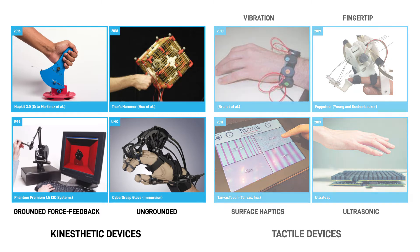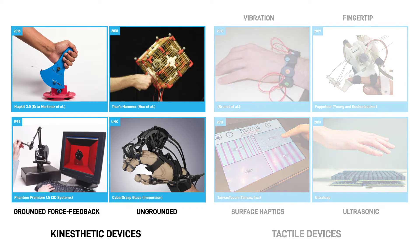Kinesthetic devices include grounded force feedback devices that are stationary robots controlled by a human, and ungrounded devices in the forms of exoskeletons, force gloves, or handheld devices that are mounted on the user's body. These devices still provide kinesthetic force to our muscles, but they are not grounded.